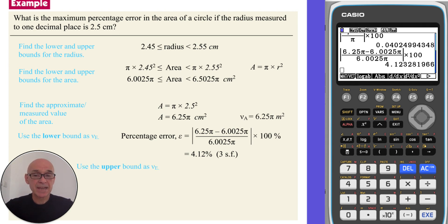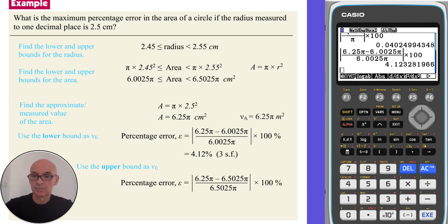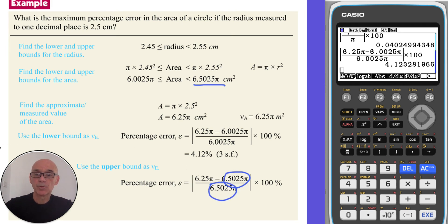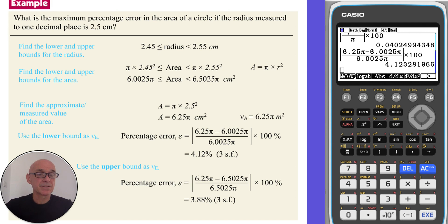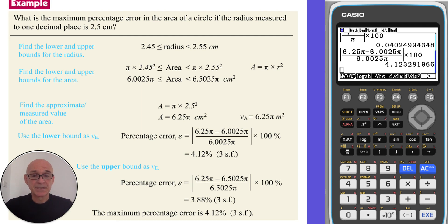Performing the calculation again using the upper band as the exact value VE — 6.5025 pi — and performing the same calculation gives a result of 3.88% to three significant figures. Taking the larger of the two values, the maximum percentage error is 4.12% correct to three significant figures.